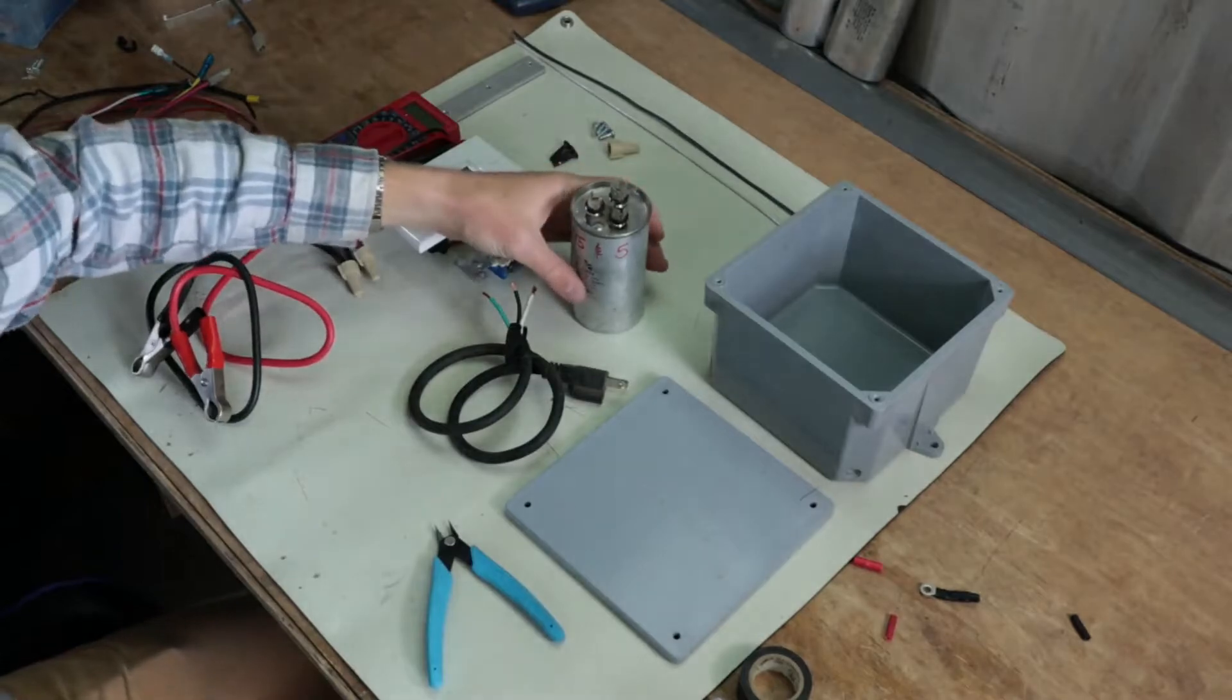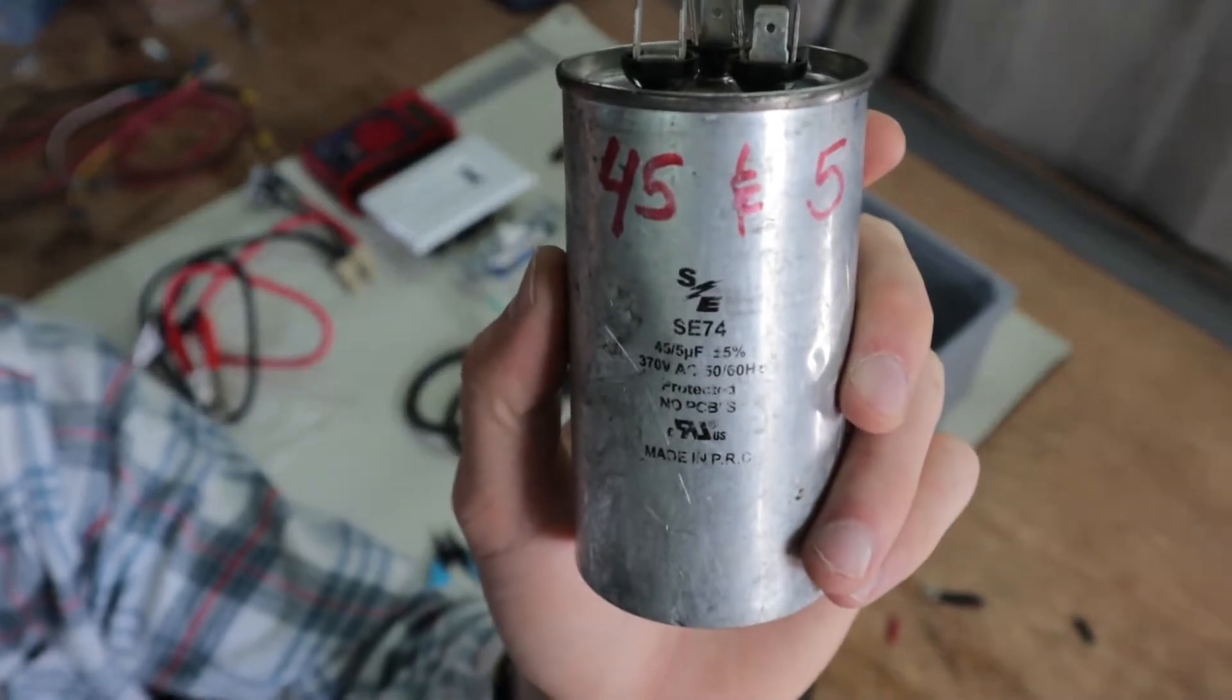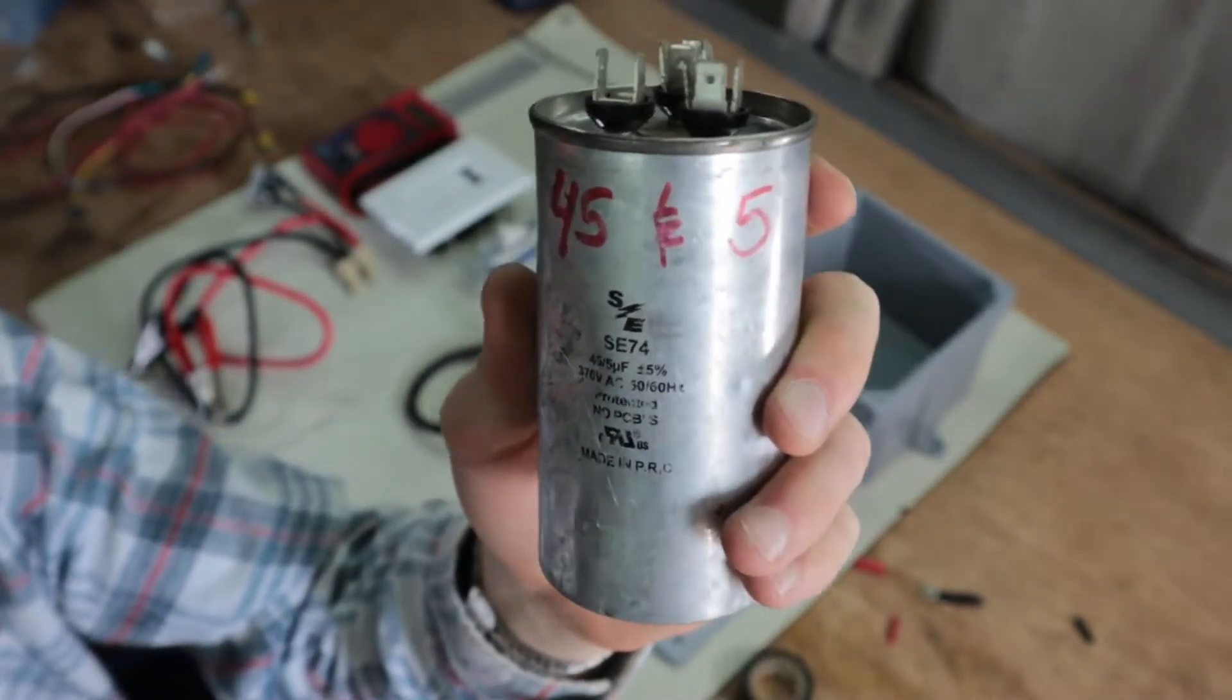Now the next thing that we're going to be doing is we're going to be wiring up the capacitor. Now this is going to be connecting to the three-way switch and to the timer. So I'll go ahead and do that now.